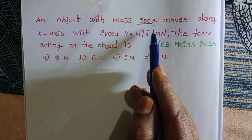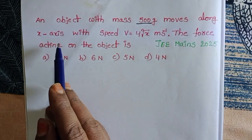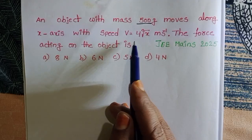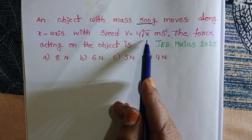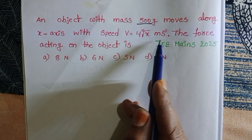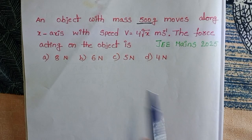An object with mass 500 grams moves along the x-axis with speed v equals 4 times square root of x meters per second. The force acting on the object is: